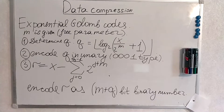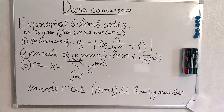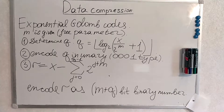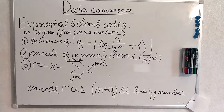Now it's time for Exponential Golomb codes. M is given — it's a free parameter — and the number is given, some number we are going to encode. Exponential Golomb codes is an integer encoding algorithm.